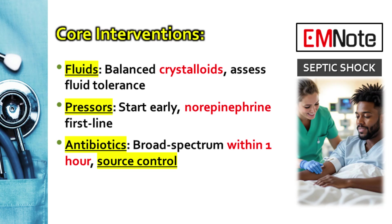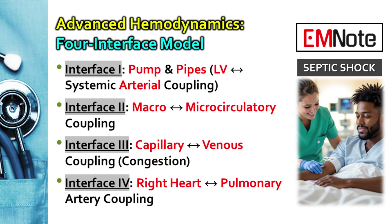Moving on to the non-negotiables: antibiotics and source control. Time is absolutely critical — broad-spectrum antibiotics need to be in within one hour of recognizing septic shock. Every hour of delay increases mortality. At the same time, source control: find and fix the source of infection — drain the abscess, pull the infected line, get surgeons involved for necrotizing fasciitis or a perforated viscus. Source control is resuscitation too.